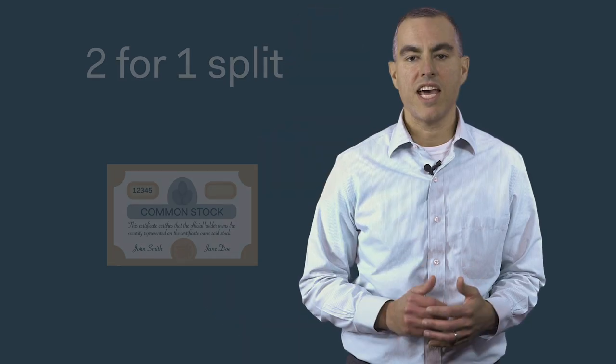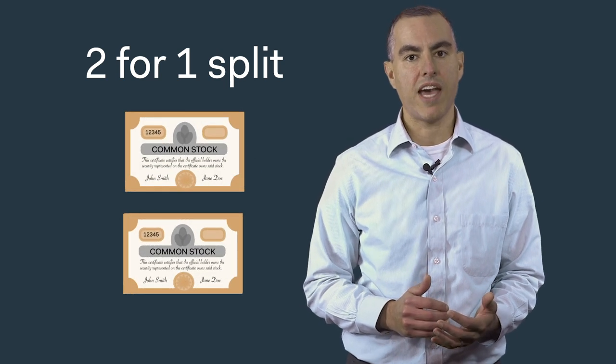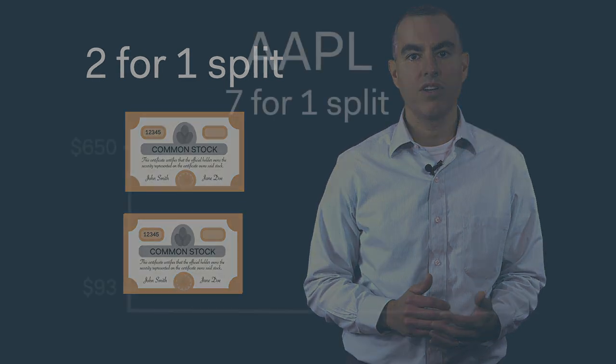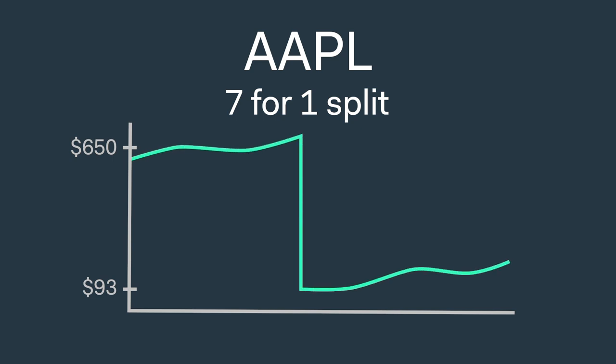Let's start with a stock split. As you may recall, a stock split is a change in the number of shares outstanding. In a two-for-one split, shareholders receive two shares for every one share that they held before the split. This will cut the stock price in half. We talked about Apple's seven-for-one stock split in our last video, which took Apple's stock price from close to $650 per share to under $100 per share. This split took place in June of 2014.